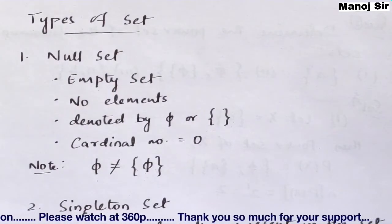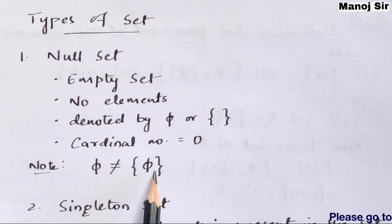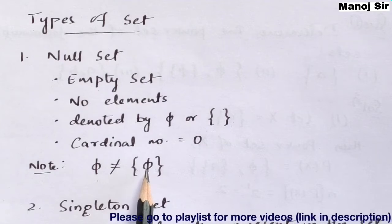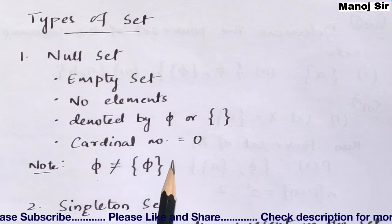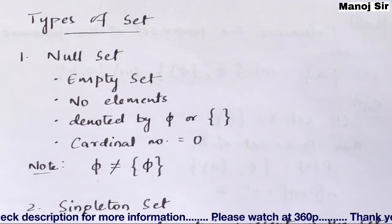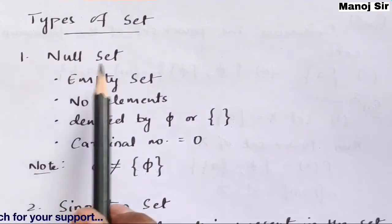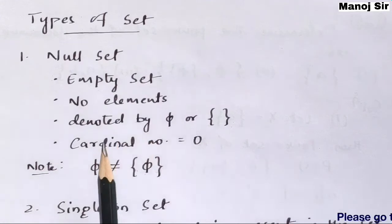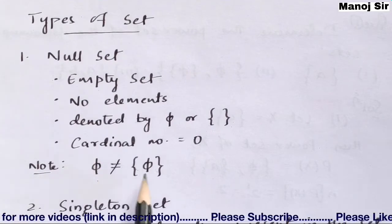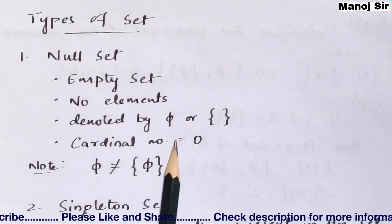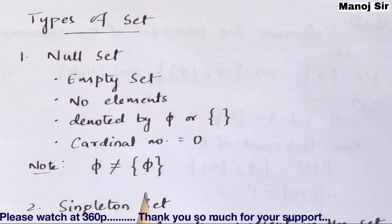There is one important point: phi by itself shows the empty set or null set, but phi placed inside curly brackets means phi is an element. So the number of elements in the null set is zero, while the set containing phi as an element has one element. Since the cardinal numbers don't match, phi is not equal to the set containing phi.